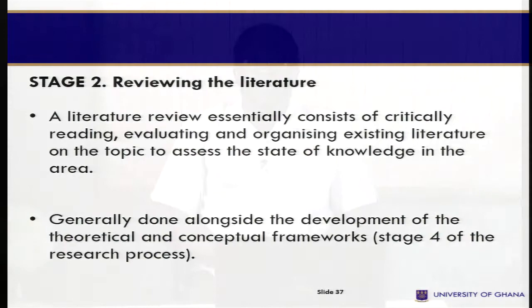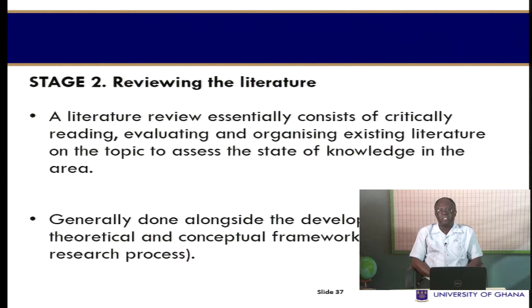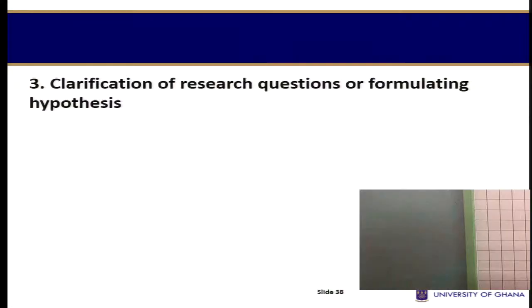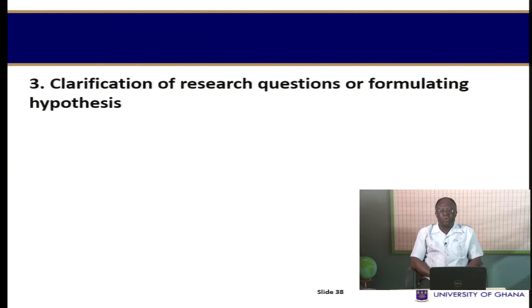The second step concerns the reviewing of related or relevant literature. A literature review essentially consists of critically reading, evaluating, and organizing existing literature on the topic to assess the state of knowledge in the area. Generally this is done alongside the development of your theoretical and conceptual framework, which is stage four of the research process. The next stage is clarification of research questions or formulating hypotheses. Research questions and/or hypotheses are formulated to guide the conduct of the study. They must be clear, and your hypothesis must be testable.